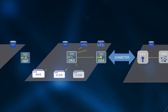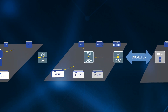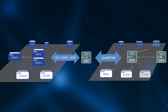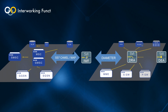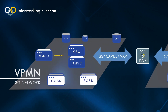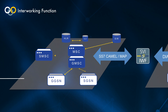To connect packet networks to legacy 3G networks, the DSC deploys the Interworking Function, or IWF. These are widely deployed in 4G and 3G networks to enable roaming, where the IWF converts the diameter signaling to legacy SS7 MAP, CAMEL and USSD.